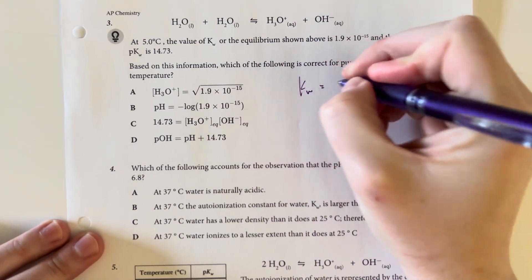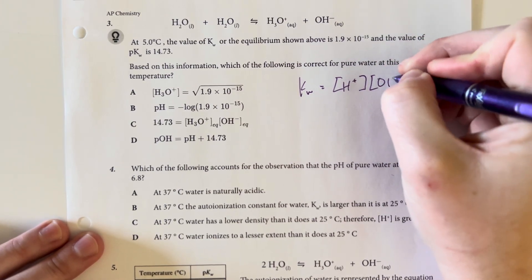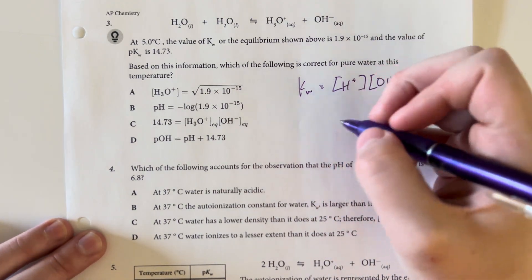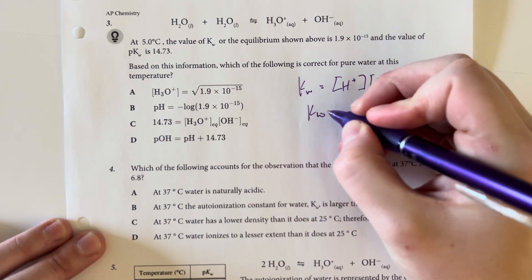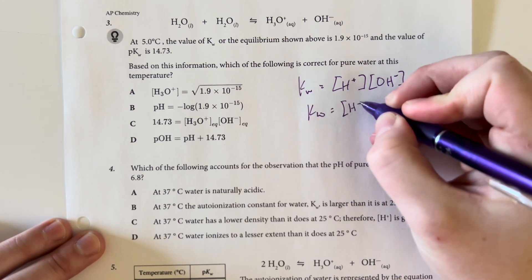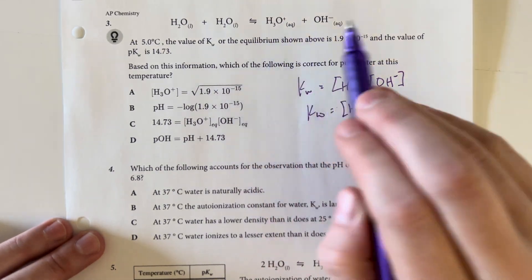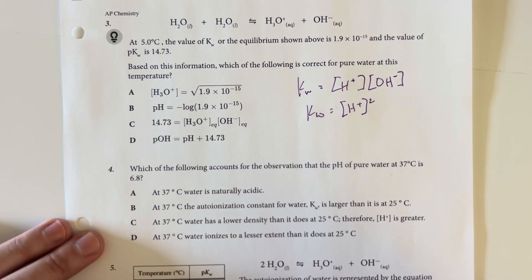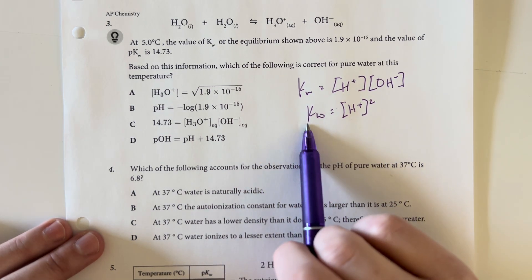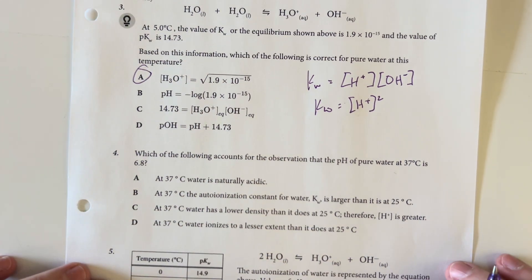So kW is going to be equal to the concentration of the hydronium times the concentration of the hydroxide, and that means that kW is effectively equal to the concentration of the hydronium squared, since these are going to be equal since we split into them equally. And so that means that the concentration for the hydronium will be the square root of kW, or answer choice A.